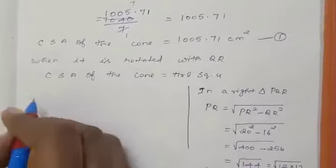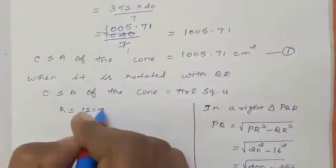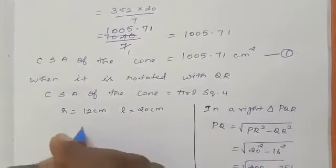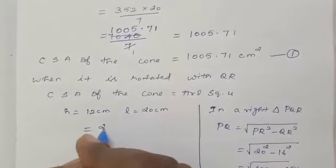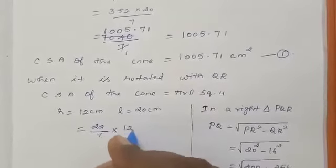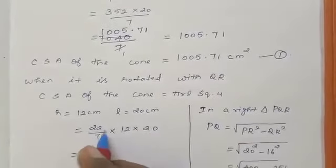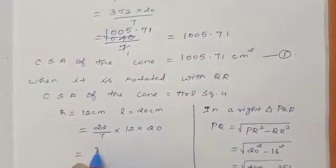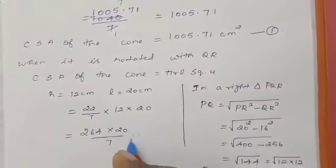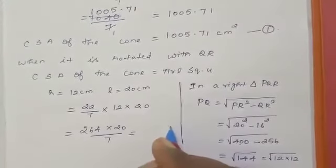So we substitute the value now. R equal to 12 cm, L equal to 20 cm. We substitute in the formula 22 by 7 into 12 into 20. 22 into 12 we can multiply means 264 into 20 divided by 7. This one we can multiply here, 264 into 20.